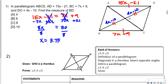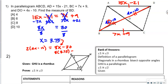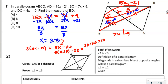Now we plug 3.75 in for X and multiply by 2 because we're looking for the whole diagonal length. So 2 times (4x minus 10) gives 8x minus 20. Substituting: 8 times 3.75 minus 20 equals 30 minus 20, which equals 10. We can verify: 4 times 3.75 minus 10 equals 5, and 5 plus 5 equals 10. So BD equals 10.